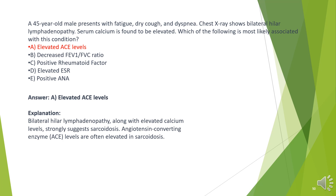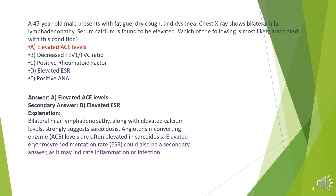The answer is A. Elevated ACE levels. Bilateral hilar lymphadenopathy along with elevated calcium levels strongly suggests sarcoidosis. Angiotensin-converting enzyme (ACE) levels are often elevated in sarcoidosis. Elevated ESR could also be a secondary answer, as it may indicate inflammation or infection.